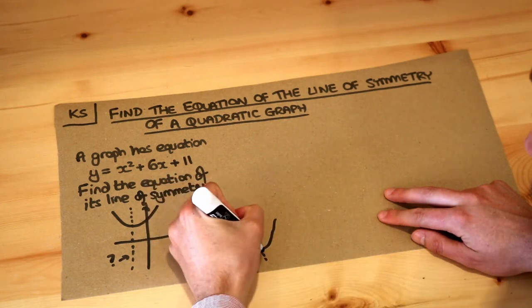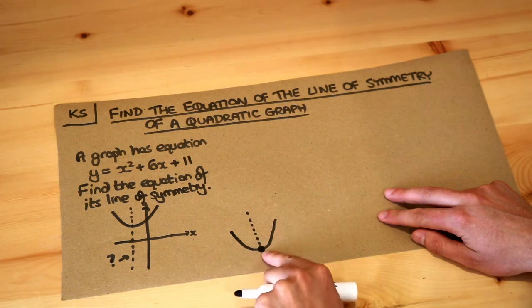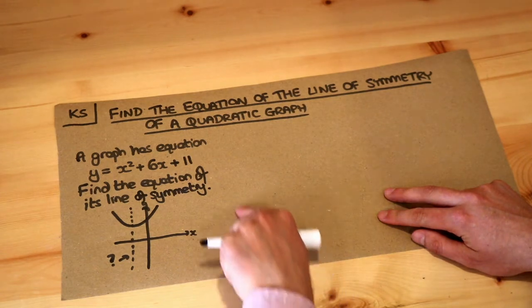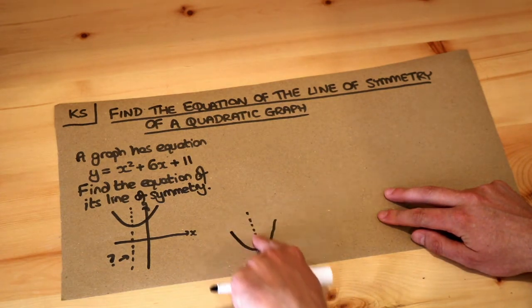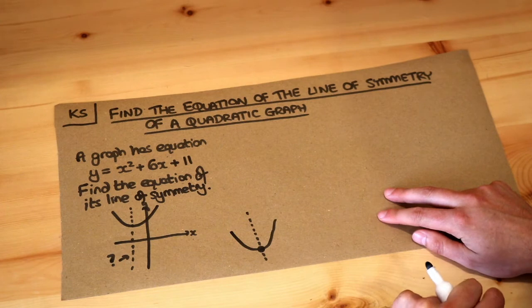Now notice that line of symmetry goes through the minimum point of that quadratic. So if we could work out what that minimum point was, its coordinate, then we would know the equation of the line of symmetry, because it would just be x equals whatever that x value is here.